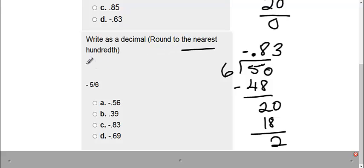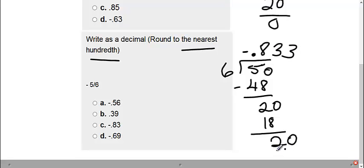Now it says round to the nearest hundredth. So I need to do it one more time, add a zero. Six goes into twenty three times. Again with two left over.